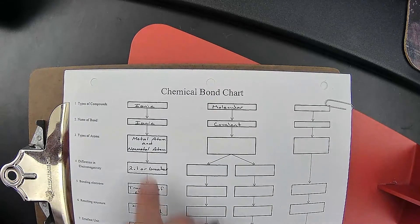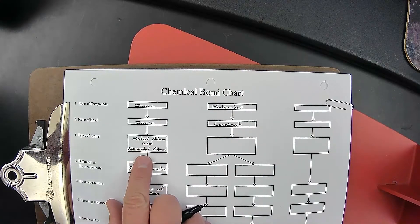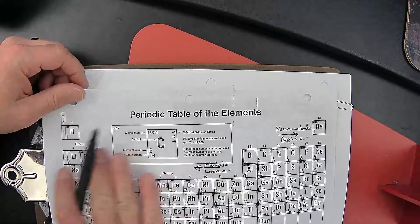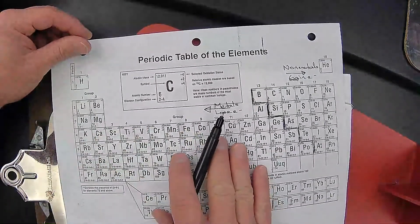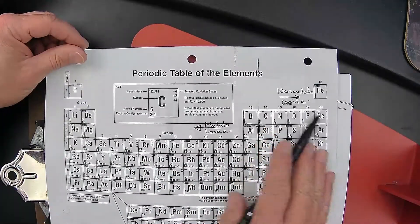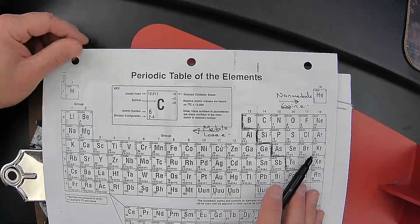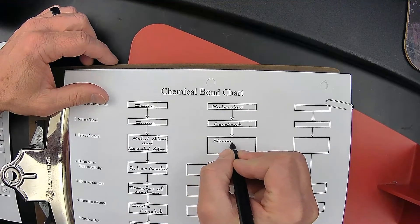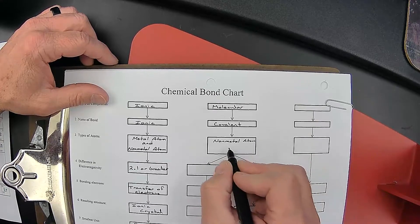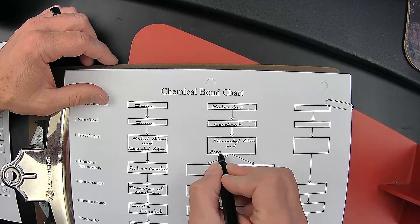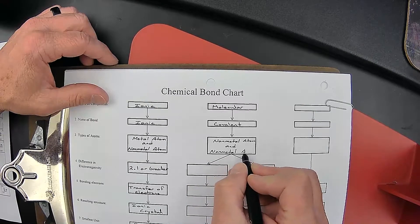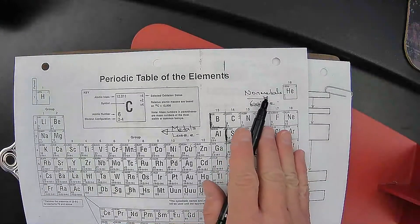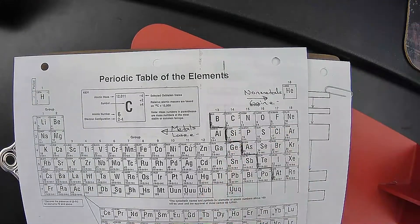Previously, we were dealing with a metal atom bonding with a non-metal atom — looking for an atom from the left side of the periodic table connecting with a non-metal from the other side. Now, what we're looking at is a non-metal atom connecting or bonding with another non-metal atom. So now we've got two atoms from the same side of the periodic table, and both of them are non-metals.